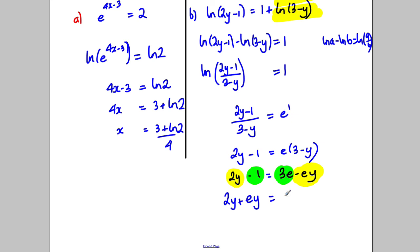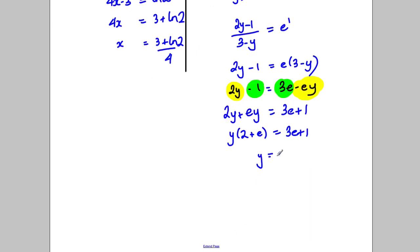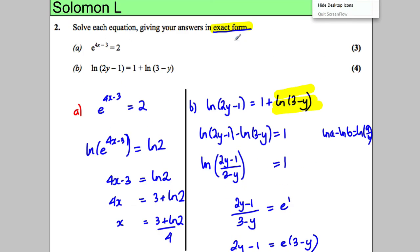Factorize the y and divide by 2 plus e, so y is going to equal 3e add 1 divided by 2 add e. And I've done for that question, just checking up here.